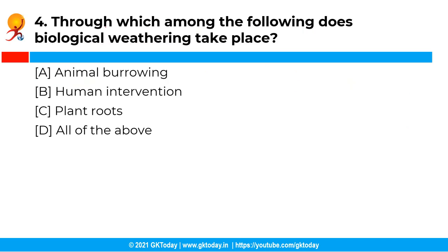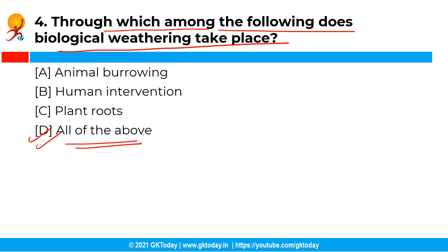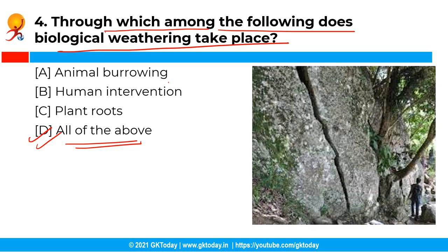The next question is: through which among the following does biological weathering take place? The correct answer is option D, that is all of the above. Biological weathering involves breaking down rocks through animal burrowing, human intervention, and plant roots. So all of the mentioned options are correct.